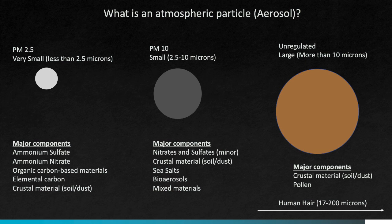PM10 includes particles that are between 2.5 and 10 microns in diameter. These particles can include some nitrates and sulfates, but also start to include more materials that come from natural sources like dust, sea salts, and bioaerosols — which include things like small pollen grains — as well as some complicated mixed materials with a range of different chemical compositions.